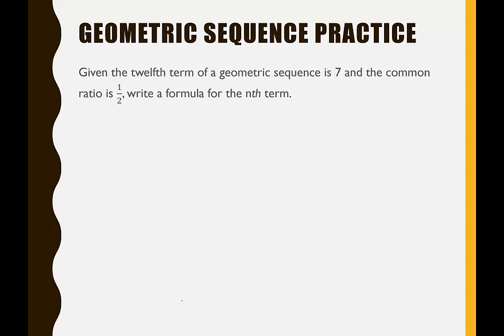Given that the 12th term of a geometric sequence is 7, and the common ratio is 1/2, write a formula for the nth term. We're given slightly different information this time. Using the formula: a sub n equals a sub 1 times r to the n minus 1. We know n equals 12, a sub 12 equals 7, and r equals 1/2. We need to find a sub 1.